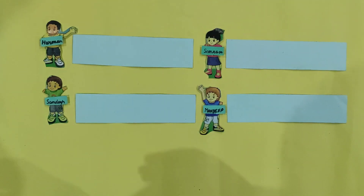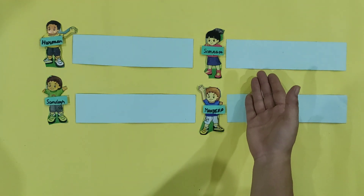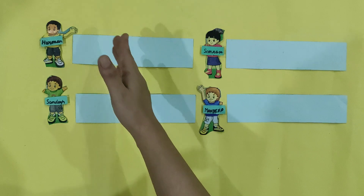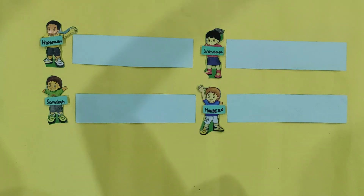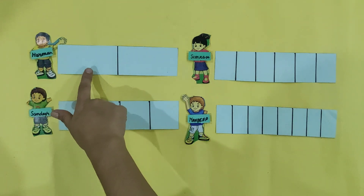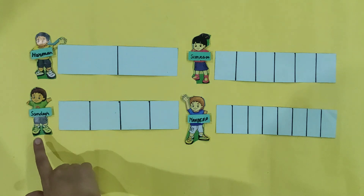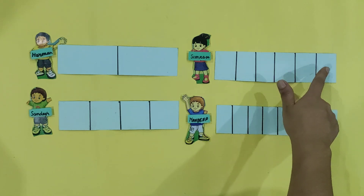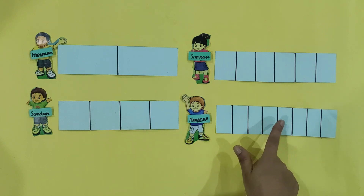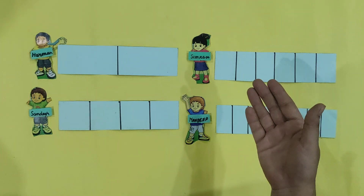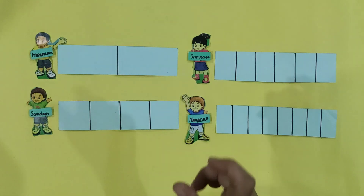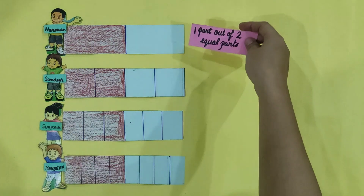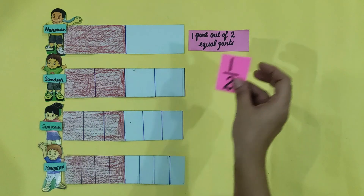Students, during the drawing period of Harman, Sandeep, Simran, and Mandip, their teacher gave 1 drawing sheet to each student and said to divide these sheets into different parts. Harman divided the drawing sheet into 2 equal parts. Their teacher then said to colour the different parts of the drawing sheet. Harman coloured 1 part out of 2 equal parts, and we write it as 1 by 2.